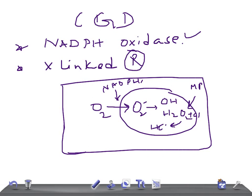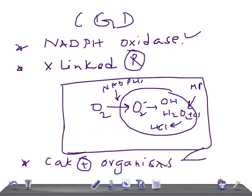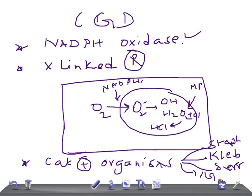The most important and interesting thing is that CGD patients are almost always infected with catalase-positive organisms. The catalase-positive organisms include Staph, Klebsiella, Serratia, and fungi like Aspergillus — very important — and Candida. These organisms repeatedly affect CGD patients.